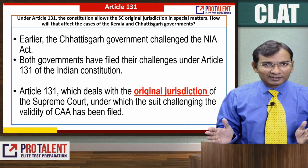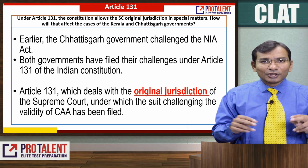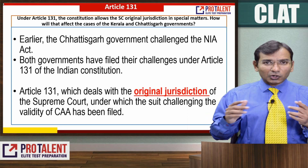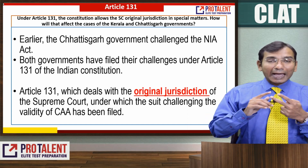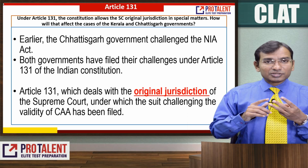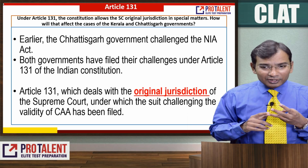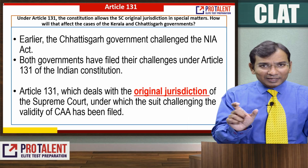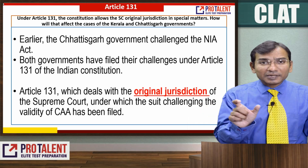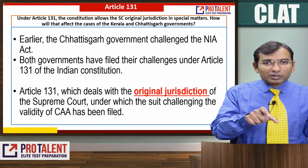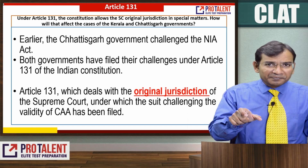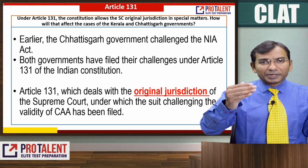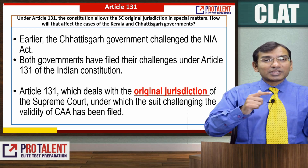So what is Article 131? Article 131 deals with the original jurisdiction of the Supreme Court. The Supreme Court has a lot of jurisdiction — one is called original jurisdiction, another is called appellate jurisdiction, and the third is called advisory jurisdiction. Appellate jurisdiction means you are not comfortable with the order of a lower court, and after going through sessions court and high court you want to appeal to the Supreme Court.